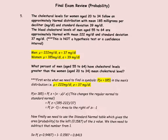This is problem number five on the probability review. Make sure you read the question once again before you start watching the video. When you read the question, we are given some information: the cholesterol levels of women in a certain age group is approximately normal. The mean for women is 185 milligrams per deciliter, and the standard deviation is 39 milligrams per deciliter.